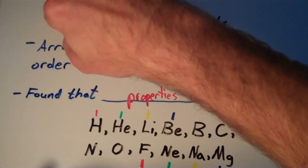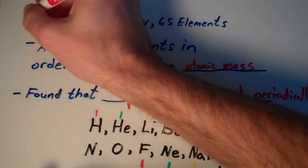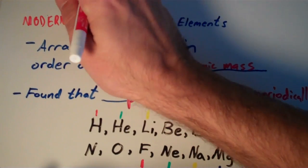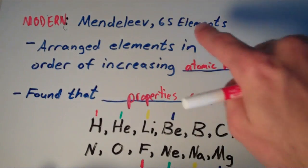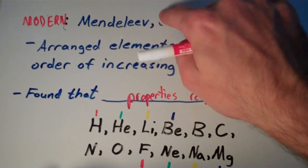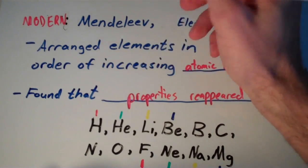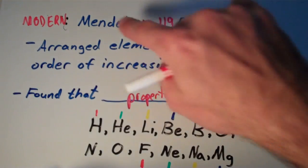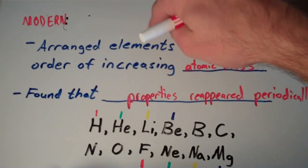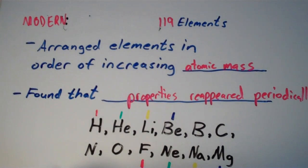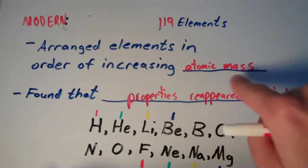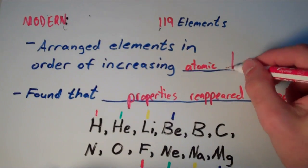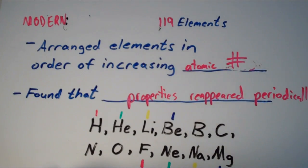For the modern periodic table, first of all, instead of 65 elements, we now know of 119 of them. Another difference is that the elements are actually arranged not in order of increasing atomic mass, but in order of increasing atomic number, or the number of protons in the nucleus.